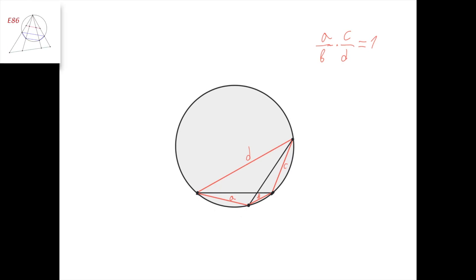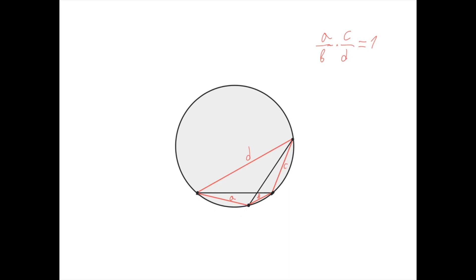Remember that the cross-ratio of four points lying on a circle is a divided by b times c divided by d, where a, b, c, and d are the red segments labeled on the picture. For which quadrilaterals does a divided by b times c divided by d equal 1? Such quadrilaterals are called harmonic quadrilaterals.